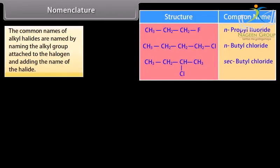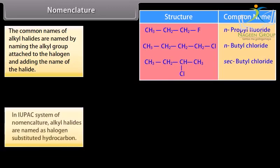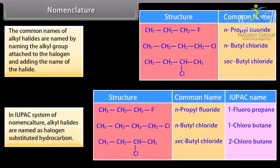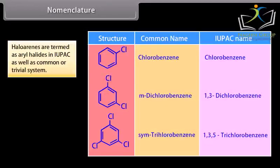Nomenclature. The common names of alkyl halides are formed by naming the alkyl group attached to the halogen and adding the name of the halide. In the IUPAC system of nomenclature, alkyl halides are named as halogen-substituted hydrocarbons. Haloarenes are termed as aryl halides in both IUPAC and common or trivial systems.